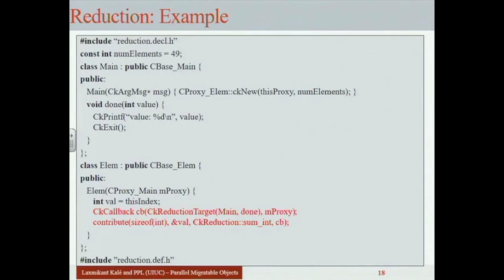When everyone contributes, the system through its own mechanism — a spanning tree or similar — adds them up, ensures everyone's contribution is counted, and invokes the done method with the final reduced value. You can also write custom reduction operations if you need something the system doesn't provide — for example, reducing a tuple where you take the max of one field and the sum of another.